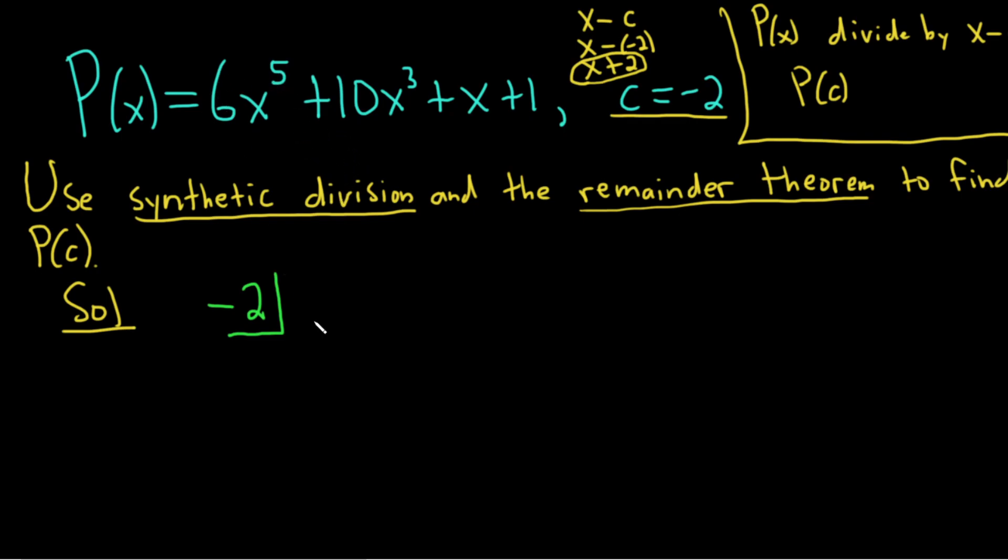So first you do the 6. And then there's no x to the 4th term, but there needs to be one here for the process to work. So if you do like a plus 0x to the 4th, it really is there, right? You just don't see it. It's invisible. So I'm going to go ahead and put the 0 there. And then here's x cubed, so then we'll put a 10 here. Oh, look at that. We're missing x squared. So I'm going to add a 0x squared, and that will give me a 0 here.